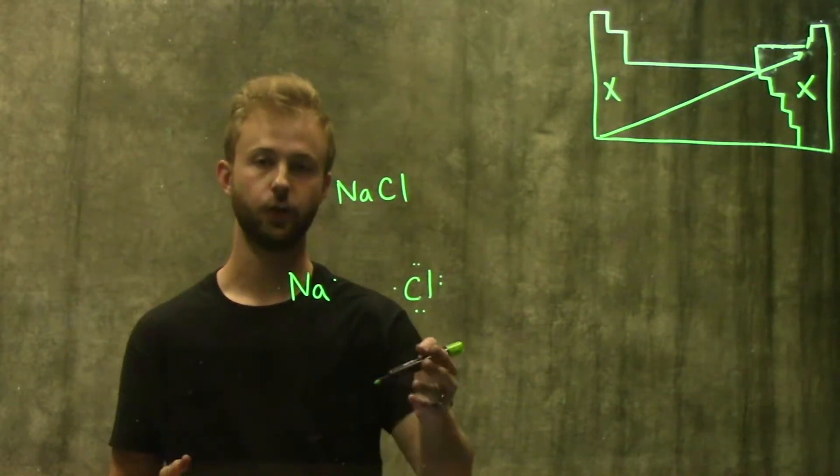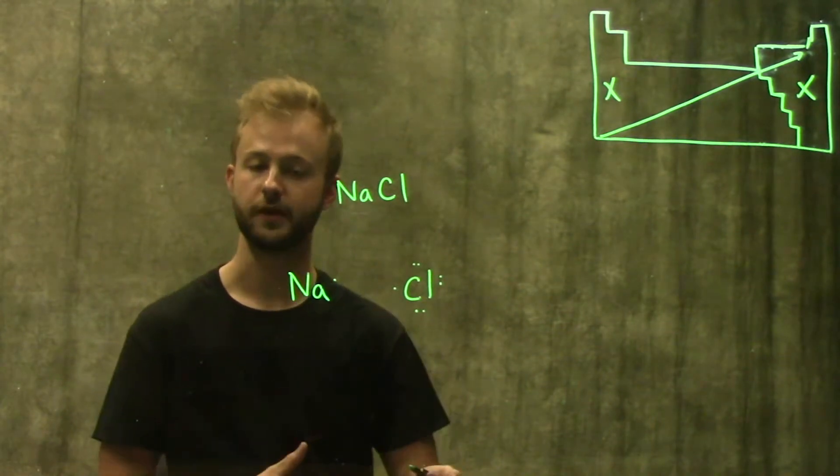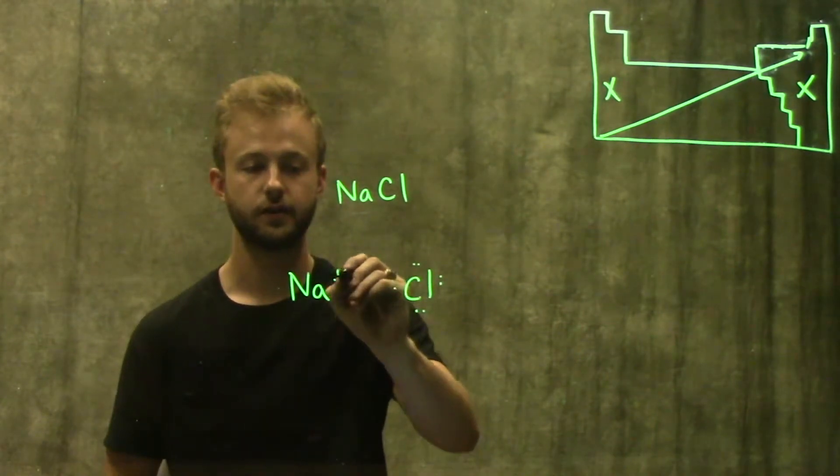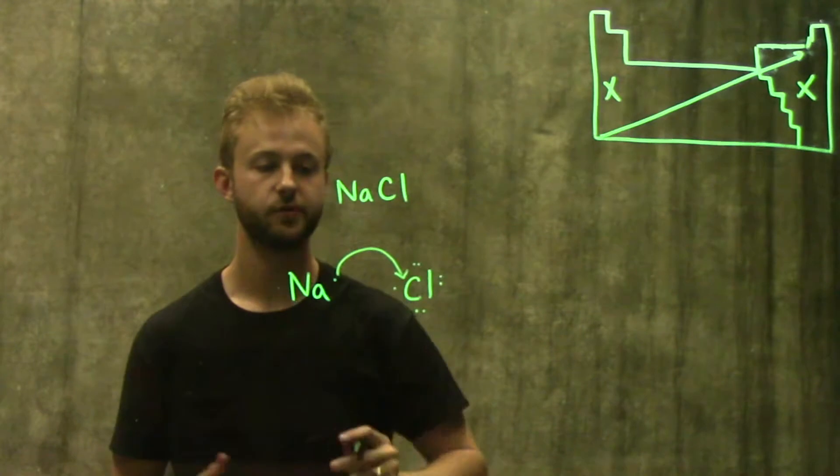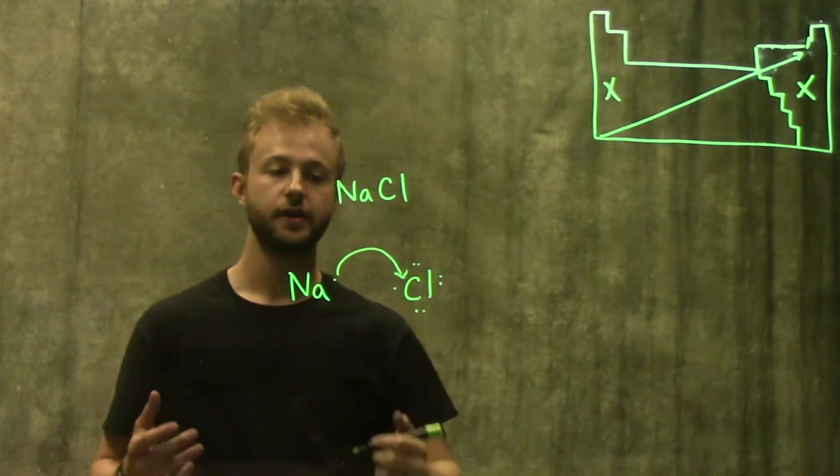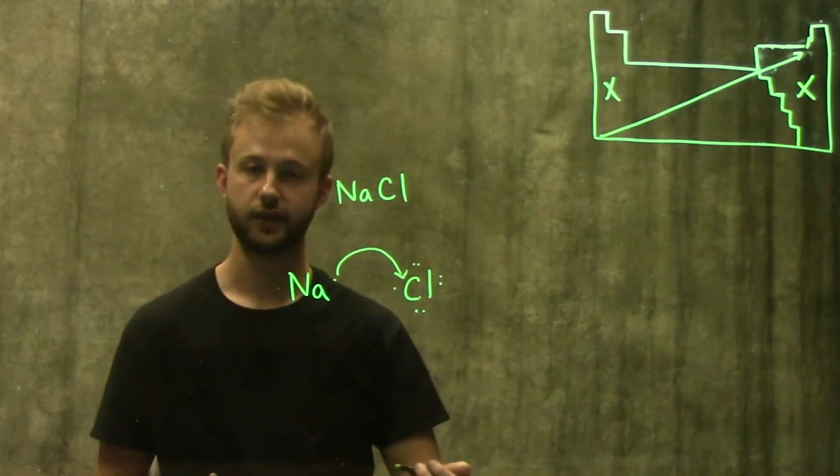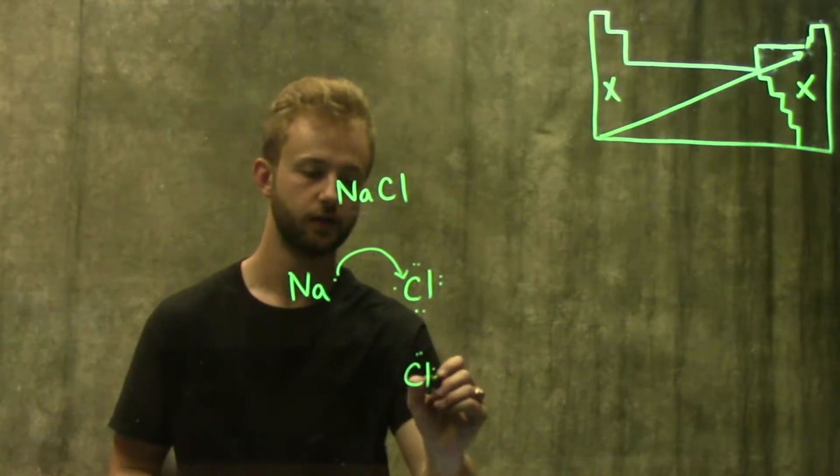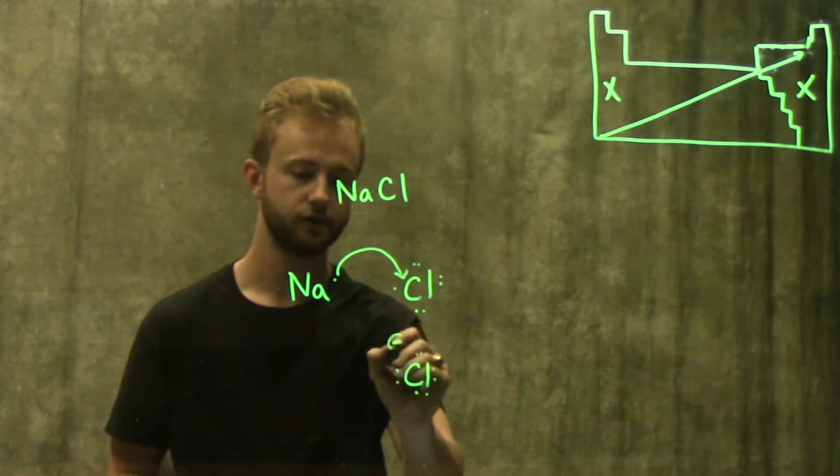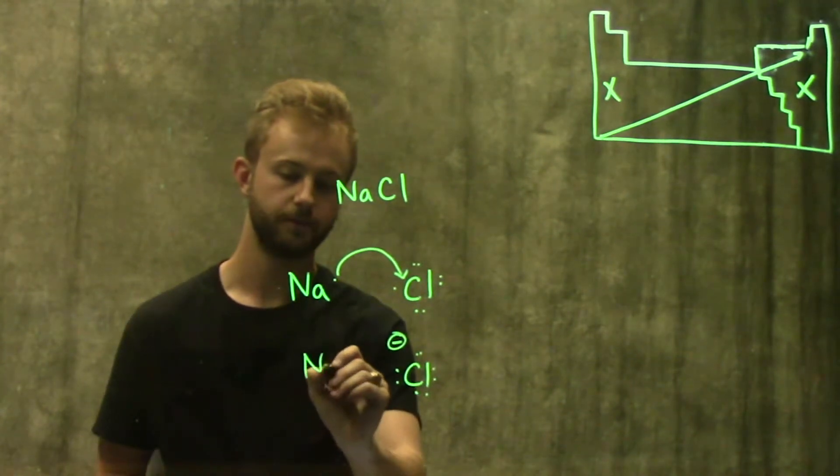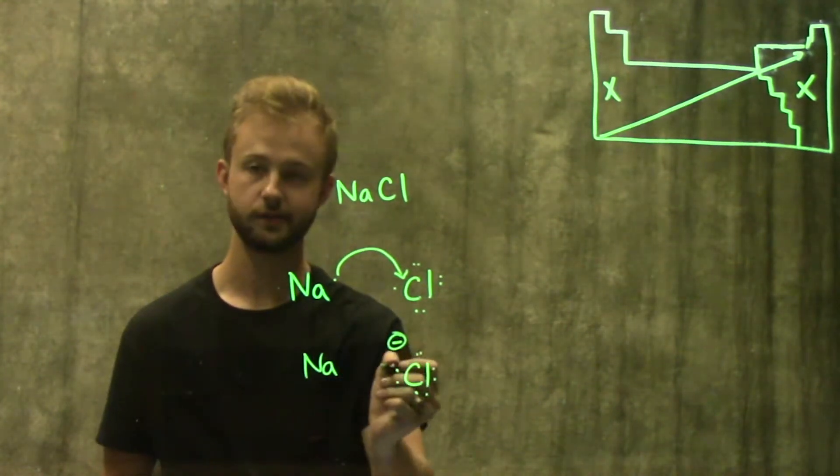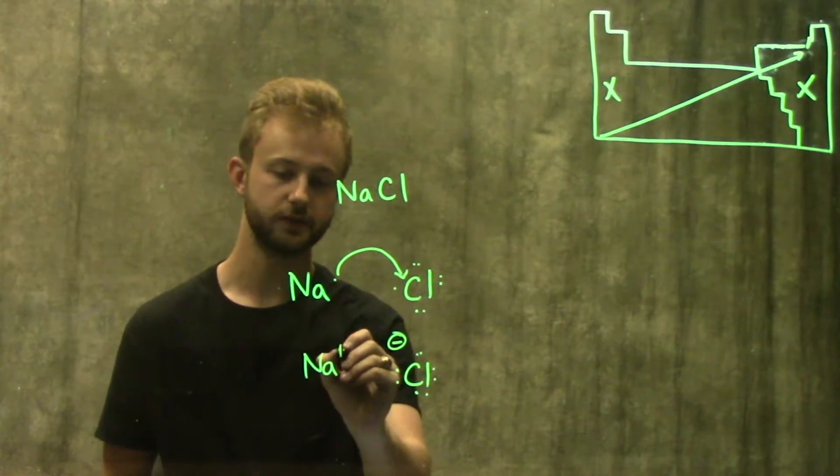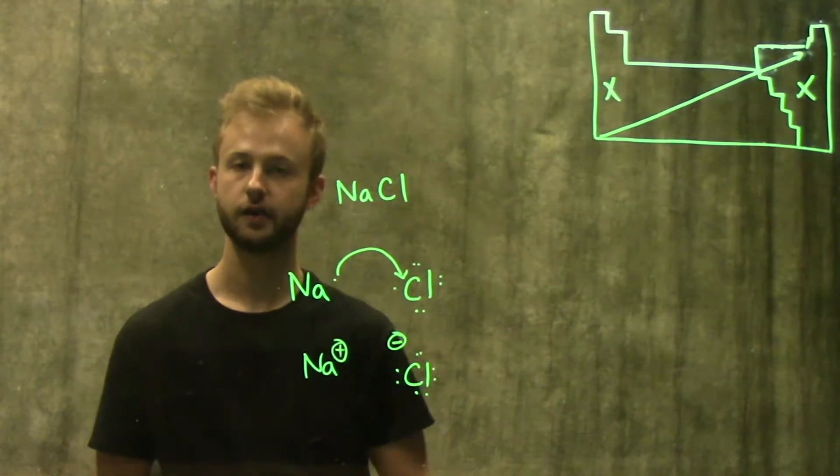That means that chlorine is going to want to take sodium's electron from it. Sodium is more than happy to let chlorine have that electron, so now chlorine has one extra electron, which means chlorine now has a negative charge, and sodium has one less electron, which means sodium now has a positive charge.